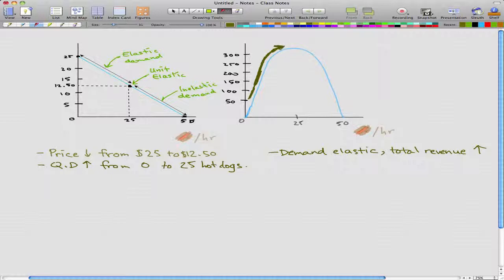This arrow represents elastic demand and represents that when we cut the price, the total revenue would increase. So this whole left side of this bell-shaped curve is when demand is elastic. Because when the demand is elastic, by cutting the price, we can increase our total revenue.